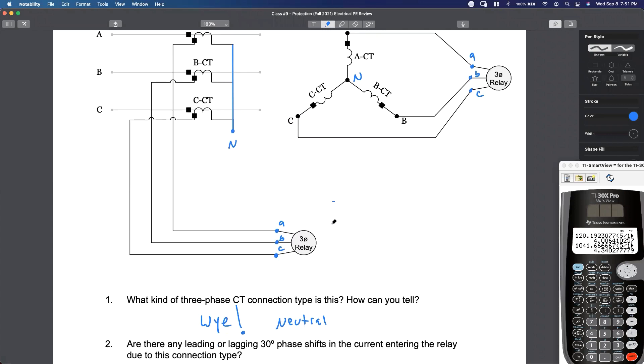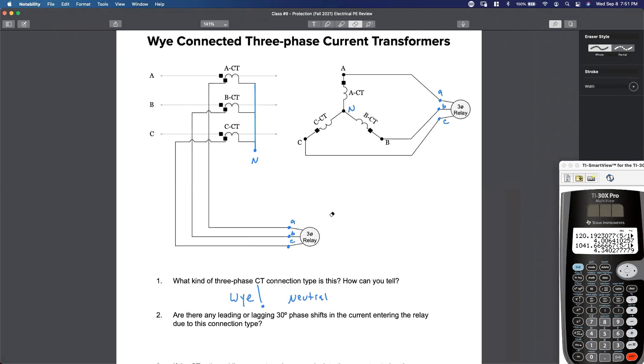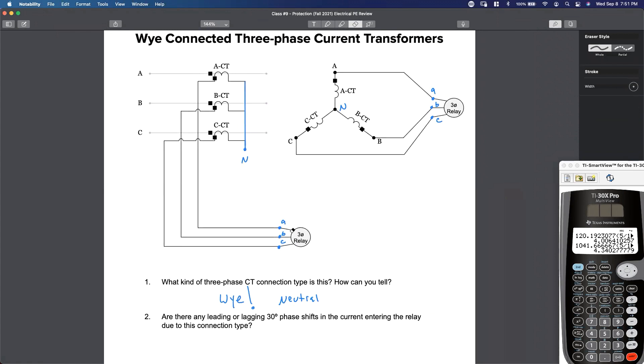Are there any leading or lagging phase shifts in the current entering the relay? In other words, here's the A line current. Here's my plus, minus voltage, right? Plus, minus.